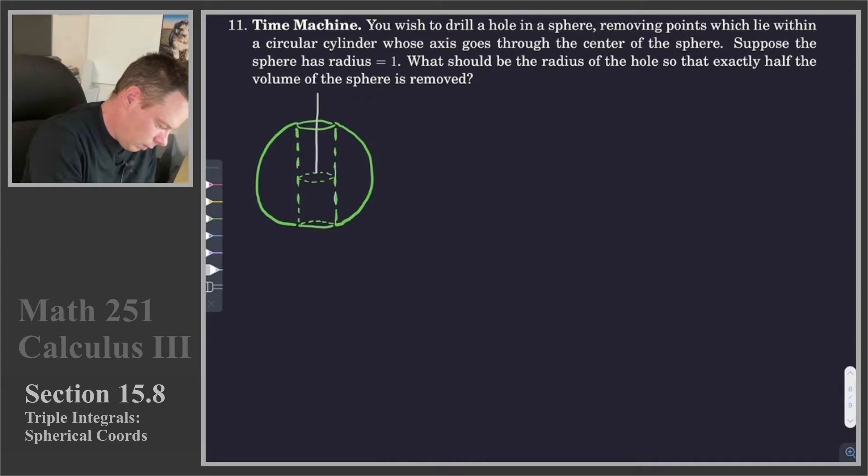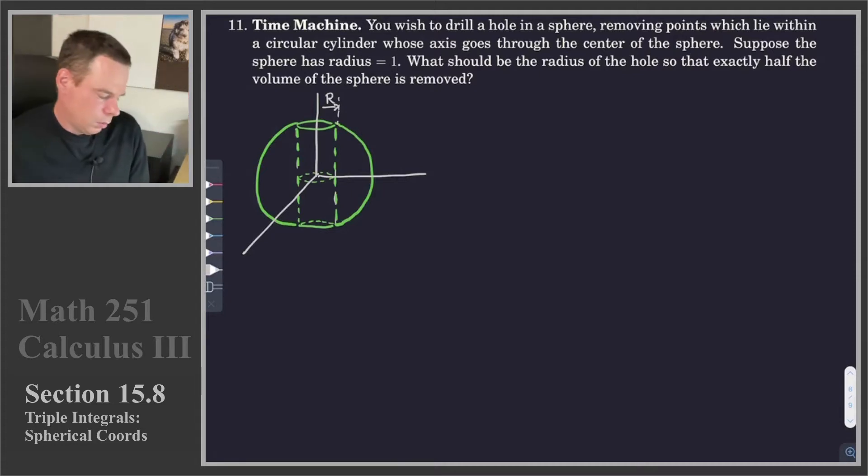This is our hole we've just drilled out of the middle of our sphere. Put some coordinate axes in, and we'd like to find the volume of this object. First, given that we drill this hole of radius capital R out of it. So if I can find the volume of this object when I've drilled a hole of radius capital R out of it, then I want to figure out what is the value of capital R so that I get exactly half of the original volume. So we're going to let capital R be the radius of the hole.